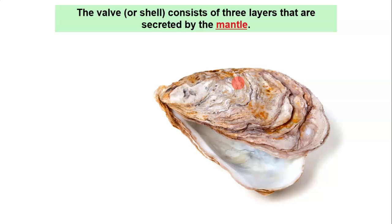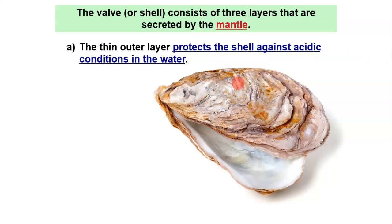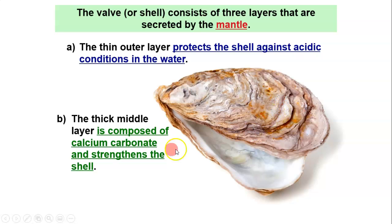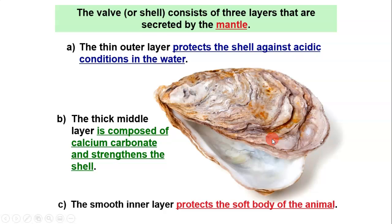The shell consists of three layers, all secreted by the mantle. The thin outer layer protects the shell against acidic conditions in the water — and this is becoming a problem as climate change increases ocean acidity, affecting how these organisms build their shells. The thick middle layer is composed of calcium carbonate, which strengthens the shell — the same compound that corals and all shells are made of. The smooth inner layer, that really beautiful layer, protects the soft body of the animal.